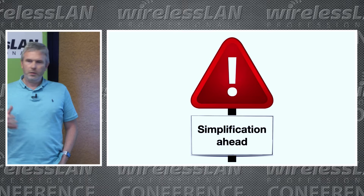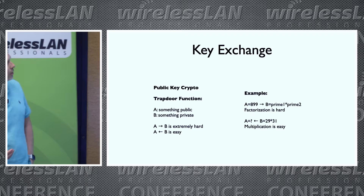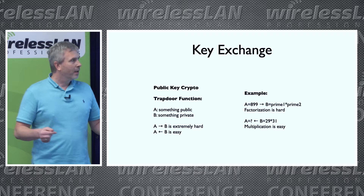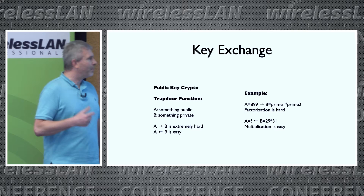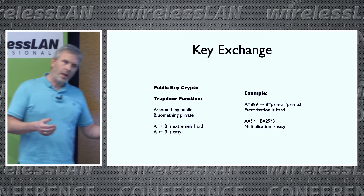With only ten minutes, there will be some simplifications, but it should be okay to get the idea behind it. Key exchanges are typically done with public key cryptography nowadays. We need to make sure that the attacker cannot calculate the key two parties agreed on, and cannot calculate the private key based on the known public key. So we have a trapdoor function — a one-way function to make this work.